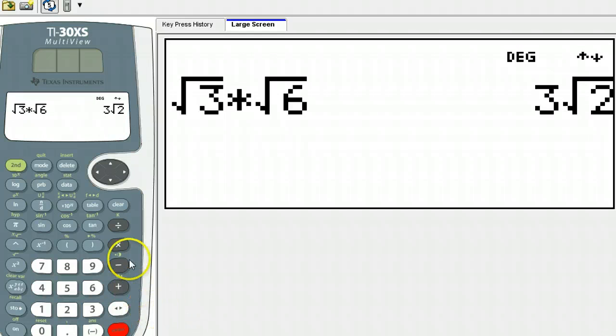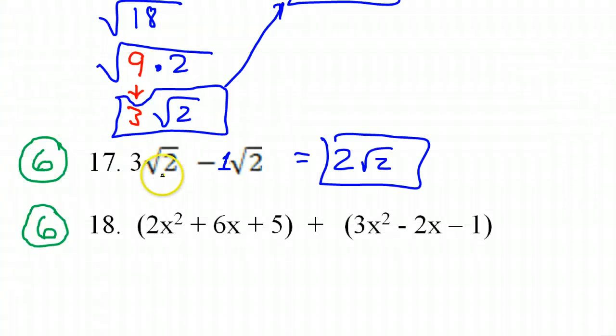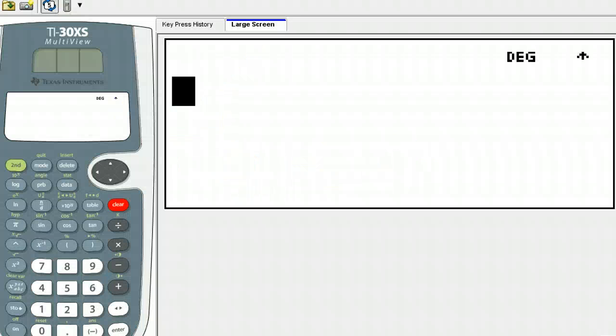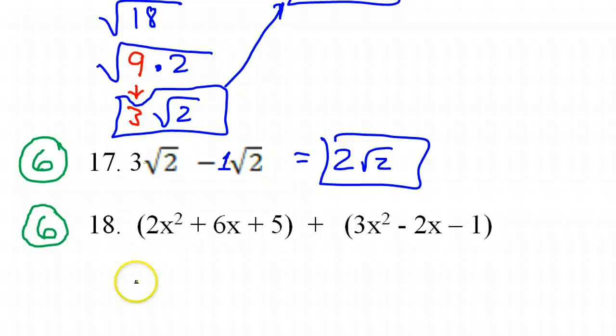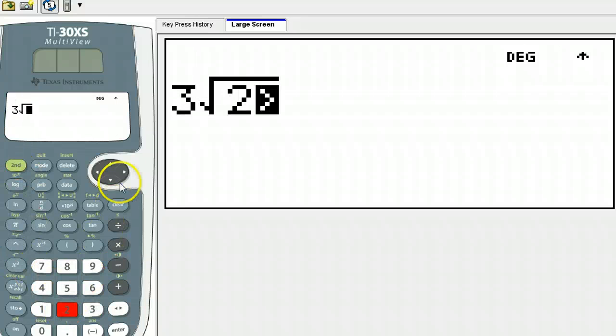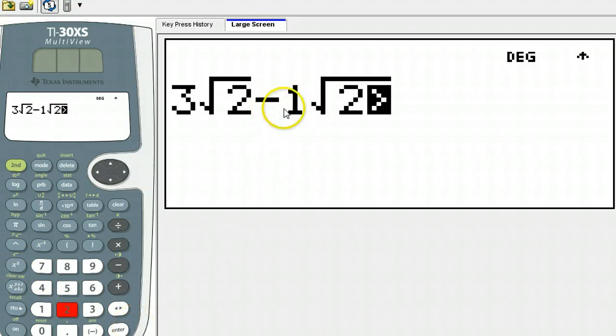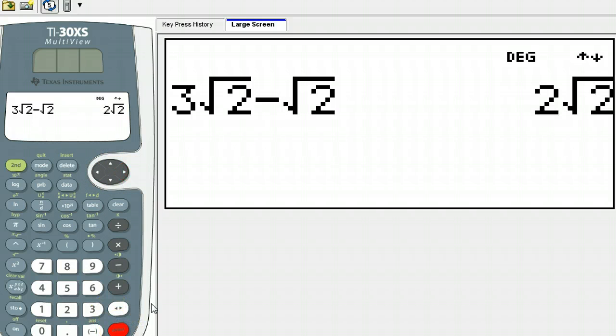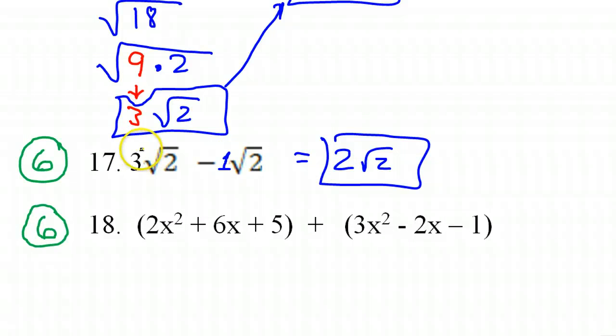If somehow that blew your mind, and I can't imagine that it would, you could put it in your calculator. You should feel a little bad about yourself as you do it. But you can do it. 3 radical 2 minus 1 radical 2. 3 radical 2 minus radical 2. Oh, look. 2 radical 2.